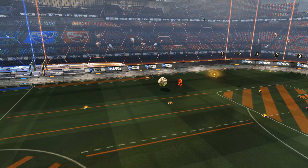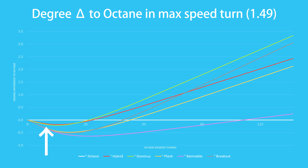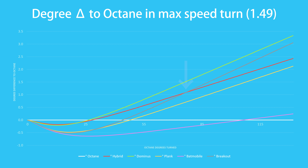So the octane has an early advantage. But is there another way to look at this? I have found another graph that's quite useful. The x-axis here shows the number of degrees the octane has turned and on the y-axis you can see the angle difference in degrees. We can easily see the break-even points of every car. The dominus does a 25-degree turn in the same time as the octane. The breakout and hybrid are equal to each other at 78 degrees. The batmobile needs a 107-degree turn to make up for the early octane advantage.